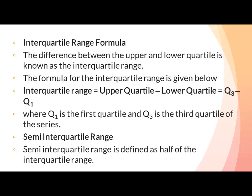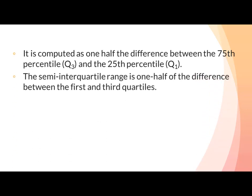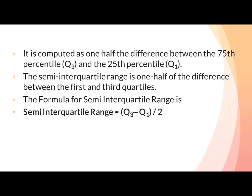Interquartile range کے آدھے value کو semi-interquartile range کہتے ہیں۔ It is computed as one half the difference between the 75th percentile (Q3) and the 25th percentile (Q1). The formula for semi-interquartile range is: semi-interquartile range = (Q3 − Q1) / 2.